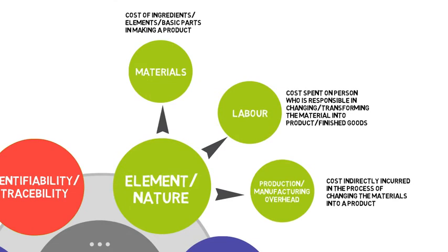Lastly, manufacturing overhead can be defined as cost indirectly incurred in the process of changing the materials into a product. In summary, remember: material, labor, and production overhead all fall into nature or element class.